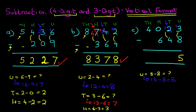Now let's do the tens. We've got one minus four. Again, one is smaller than four, so we cannot do this. What we're going to do is take one from the hundreds. But hold on — the hundreds is zero. So we have to move one more to the left and take it from the thousands. Let's cross out the four. Four minus one is three, and the one we have taken from here we're going to add it to the hundreds column. Now the hundreds, we have 10. So we're going to cross out the 10. 10 minus one is nine, and the one from there we've taken across to add it to the tens. So the tens has now become 11 minus four. 11 minus four is seven.